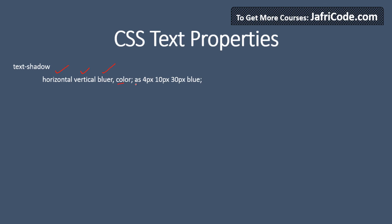For text shadow, there is a horizontal value, a vertical value, a blur value, and a color. For example, 4 pixels sets the horizontal side, 10 pixels sets the vertical side, 30 pixels controls the blur, and then the color will be blue. There is also word spacing to set space between two words, and letter spacing for the distance between individual letters.